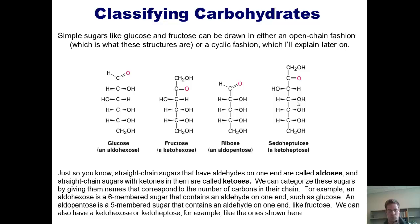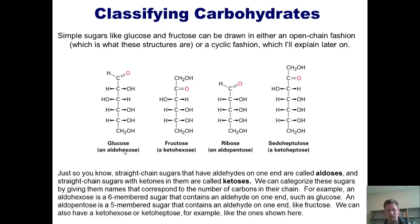We can categorize these sugars further by giving them names that correspond to the number of carbons in their chains. For example, an aldohexose is a six-membered sugar that contains an aldehyde on one end — so glucose is indeed an aldohexose. An aldopentose is a five-membered sugar that contains an aldehyde on one end — and ribose is an aldopentose.